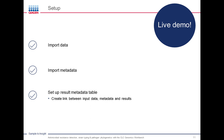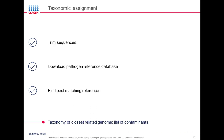The first analysis step is taxonomic assignment for these five isolates. We will start by trimming the sequences, then download a pathogen reference database in order to assign taxonomy. From this reference database, we will find the best matching reference. The output will be a list of taxonomy of the closest related genome and also a list of potential contaminants. I will now go back to the live demonstration.